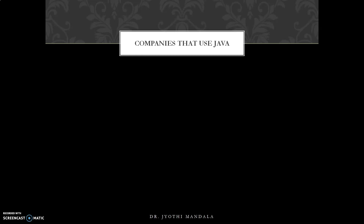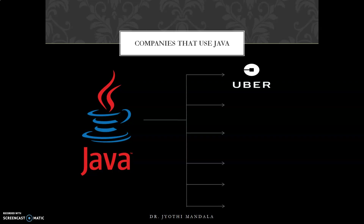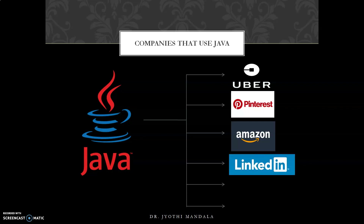Let us see what companies use Java. I will show you some companies — it is not limited to these. This is the logo used for Java; the reason behind this logo I will tell you in the next slide. Companies using Java include Uber — the Uber software is completely developed using Java — Pinterest, Amazon, LinkedIn, Oracle, and Apple.